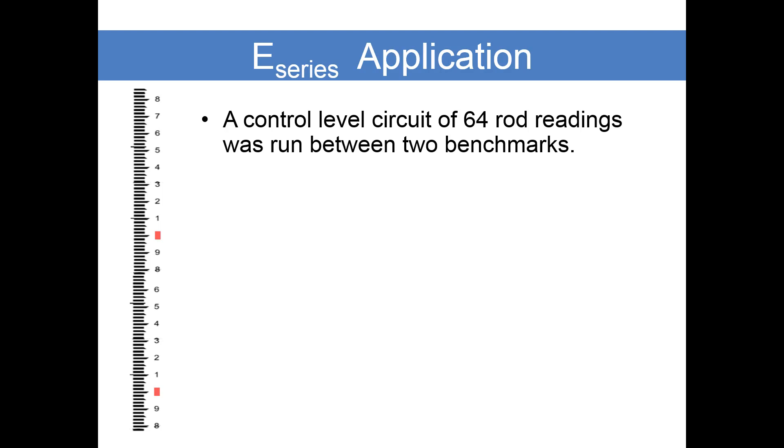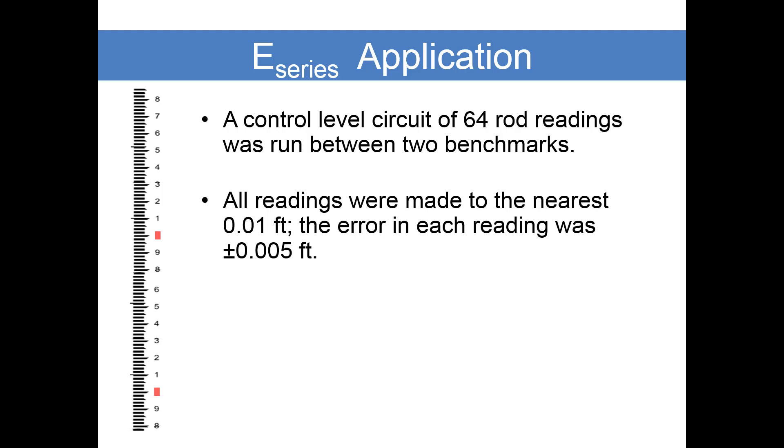Let's consider a control level circuit that has 64 rod readings. All the rod readings were made to the nearest 1 hundredth of a foot. That is, the error in each reading could be plus or minus 0.005 feet.